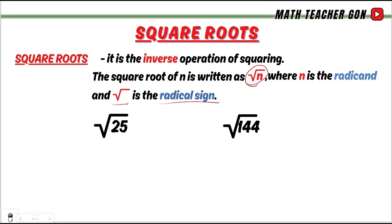For example, the square root of 25 is equal to 5. Why? Because the square root of 25 is the same as 5 times 5.